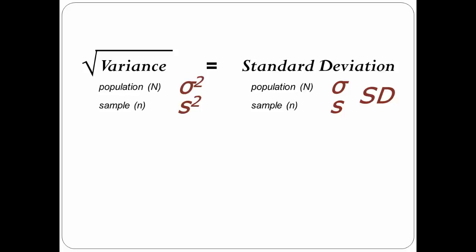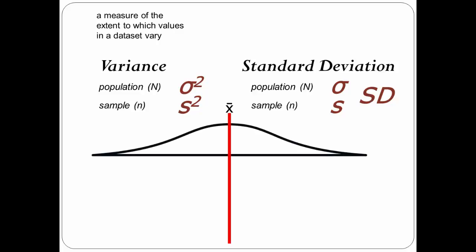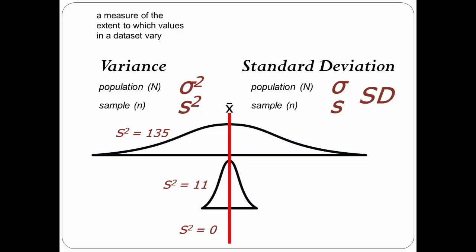Variance describes the extent to which values in a dataset vary. It measures how far a set of numbers is spread out in relation to the mean. Are the scores spread out a lot, or are they all clustered together around the mean? The larger the variance statistic, the more spread out the data are. The smaller the variance statistic, the more the scores are clustered around the mean. A variance of zero means that all the scores in a dataset are the same — they are the mean.